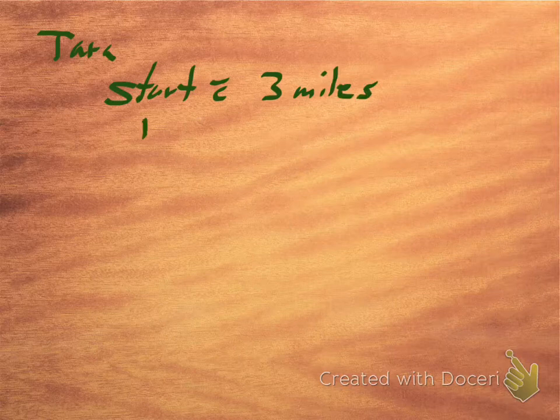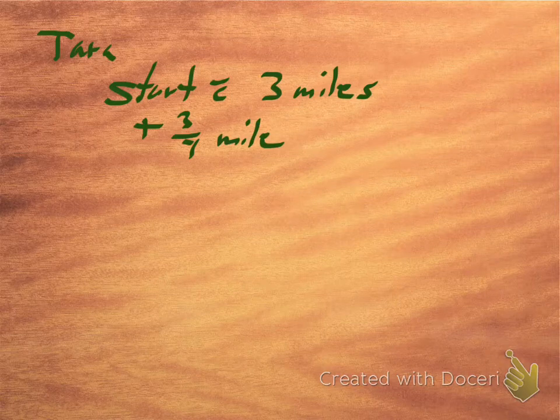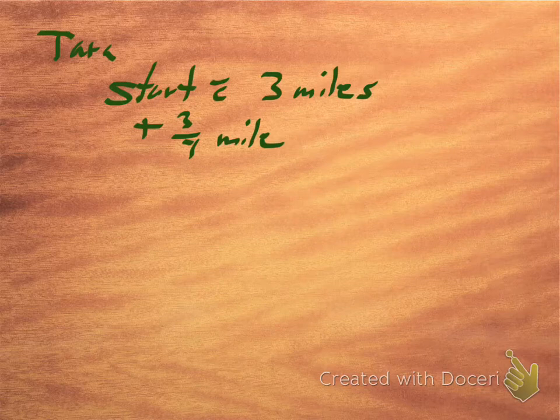There's an example in the book, and the example is pretty straightforward. It's a great example about a girl named Tara. Let's say she is training to be in a marathon, and she is going to run a certain distance each day. She's going to start with three miles. And each day, she's going to add three-fourths of a mile. Maybe she's going to run a 10K, which is about 6.2 miles.